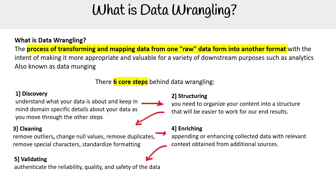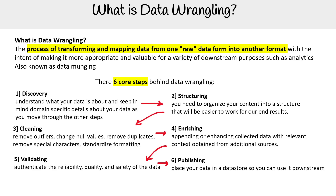The fifth step is validating: authenticating the reliability, quality, and safety of data. The sixth step is publishing: place your data in a data source so you can use it downstream. When talking about AWS specifically in the context of data wrangling, there is SageMaker Data Wrangler and AWS Glue Data Brew.